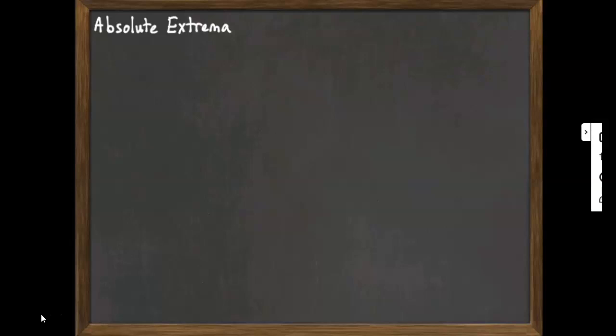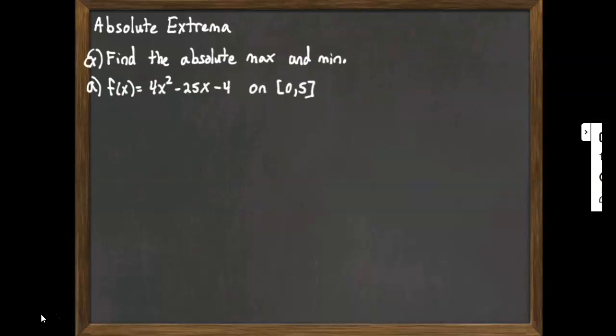When we say absolute extrema, we're talking about the absolute maximum and the absolute minimum of the function. Sometimes these are referred to as global max and global min. So our directions here are to find the absolute max and min for the given function. In our first example here, we're just given a basic little polynomial, and we're told to limit ourselves to the interval 0 to 5.